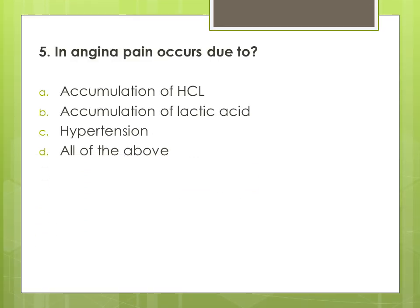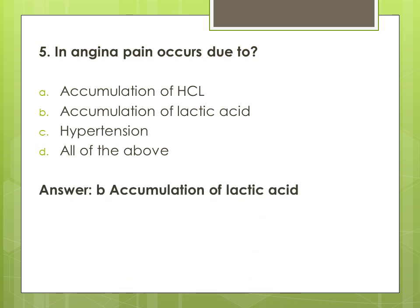Question 5: In angina, pain occurs due to — options are: A. accumulation of HCL, B. accumulation of lactic acid, C. hypertension, and D. all of the above. The correct answer is B. accumulation of lactic acid.